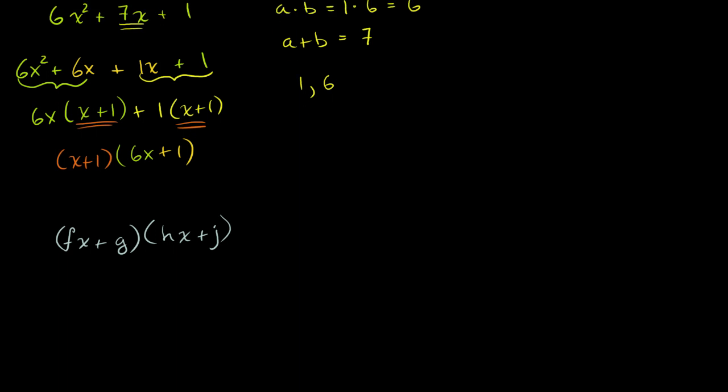Let's say I have fx plus g times hx plus, I'll use j instead of i. You'll learn in the future why I don't like using i as a variable. So what is this going to be equal to? Well, it's going to be fx times hx, which is fhx squared. And then fx times j, so plus fjx. And then we're going to have g times hx, so plus ghx. And then g times j, plus gj. OK, or if we add these two middle terms, if you add the two middle terms, you have fh times x squared plus, add these two terms, fj plus ghx plus gj.